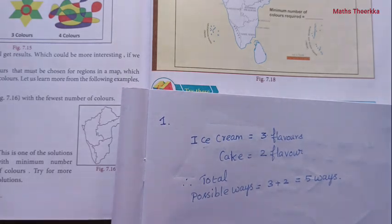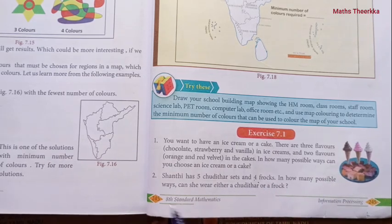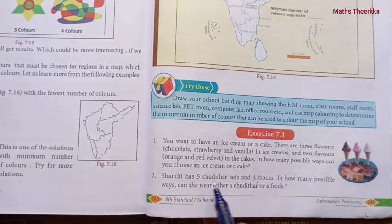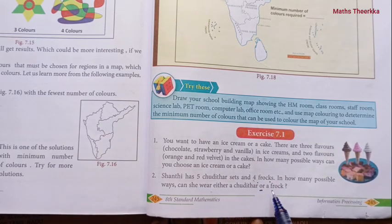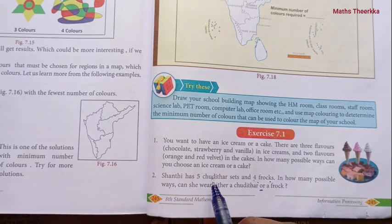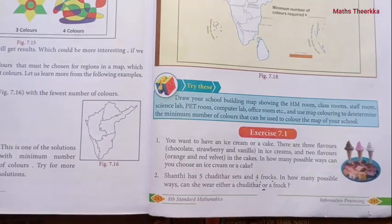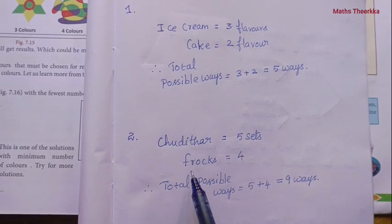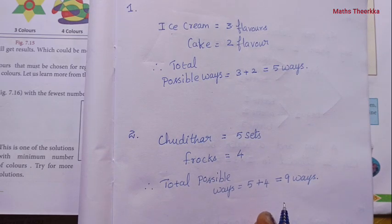Next is the second question. Shanti has 5 chudidar sets and 4 frocks. In how many possible ways can she wear either a chudidar or a frock? Since it is chudidar OR frock, total possible ways = 5 plus 4 = 9 ways.